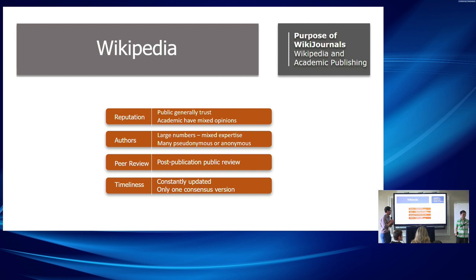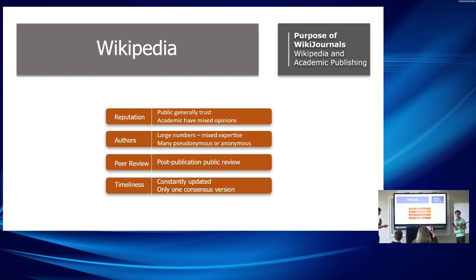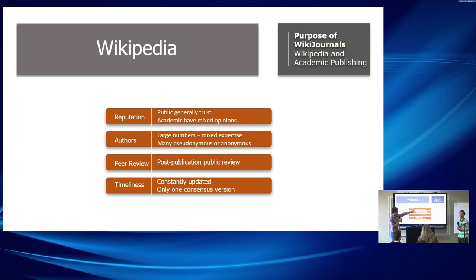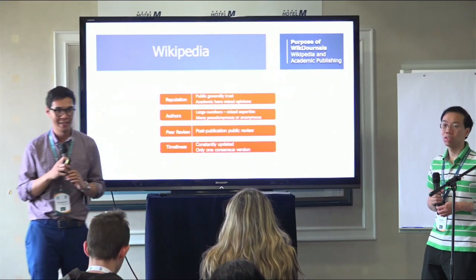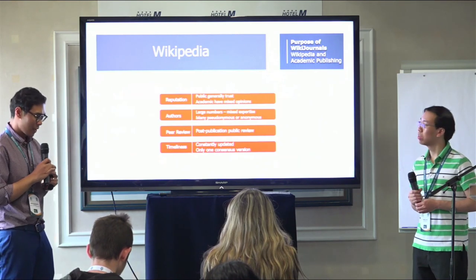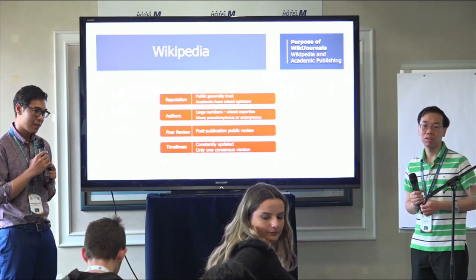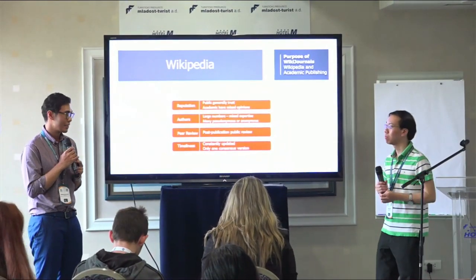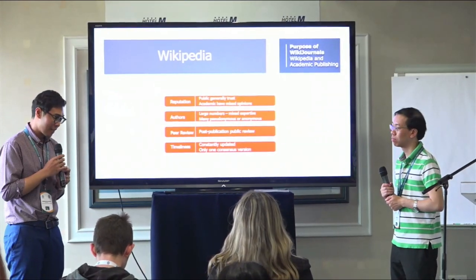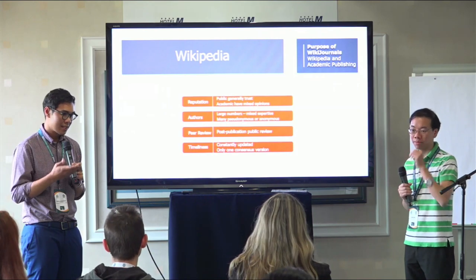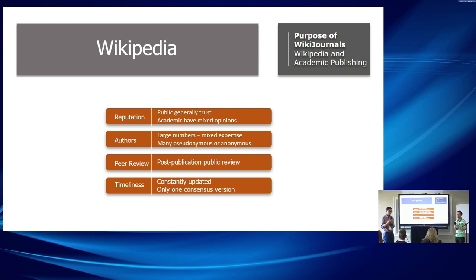So why do WikiJournals? It's about reputation. The public generally trust Wikipedia, but people in academia tend to have mixed opinions. In the early 2000s, most in academia believed Wikipedia was not a reliable reference source. As time moved on, we realized that rather than criticizing whether or not Wikipedia is a reliable source, the only thing we can do is to make it better.